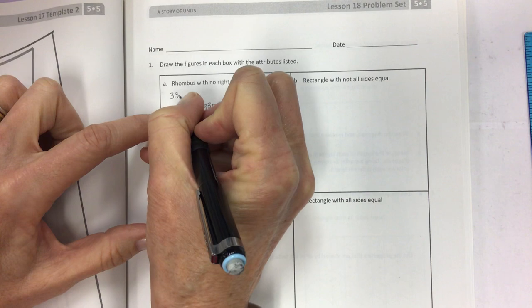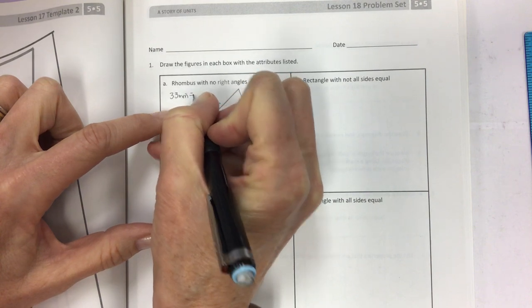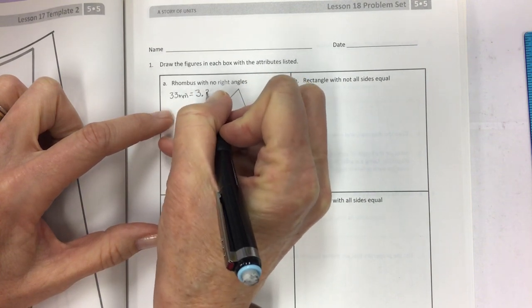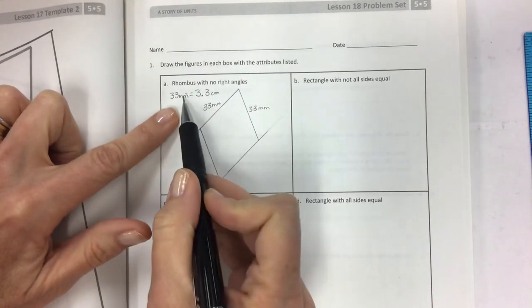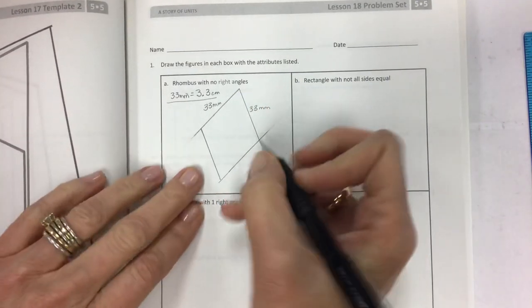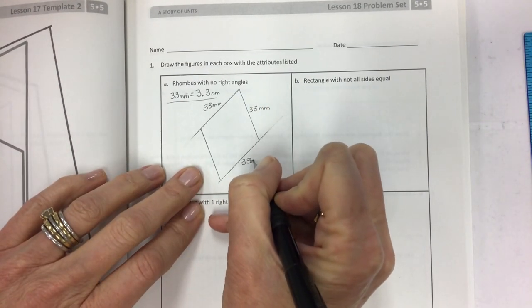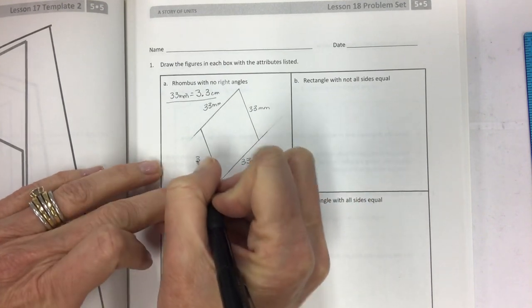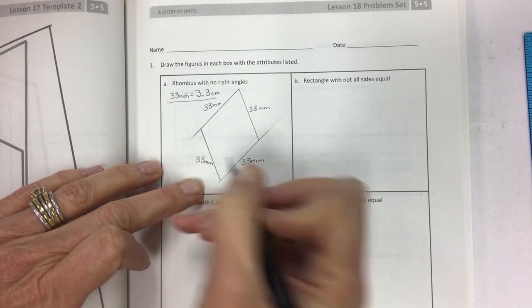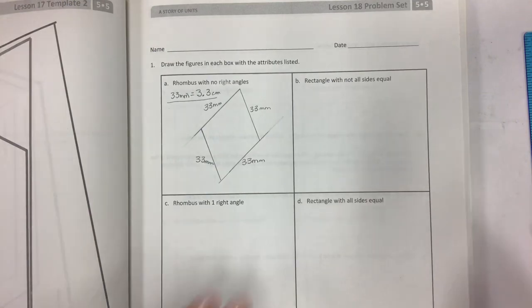You can also put millimeters is equal to 3 and 3 tenths centimeters. Same measurement. There you go. And there you go. Rhombus. Let's move on.